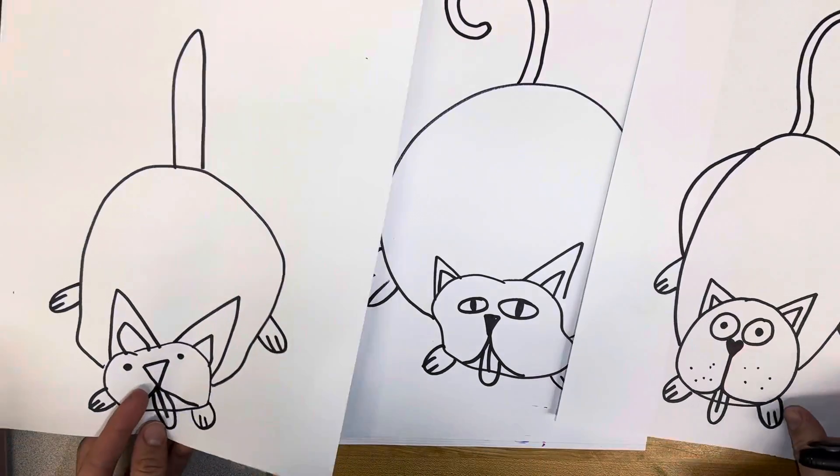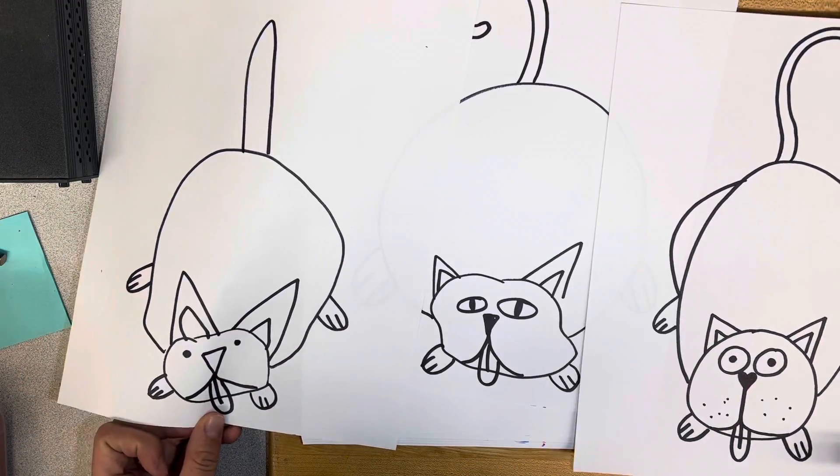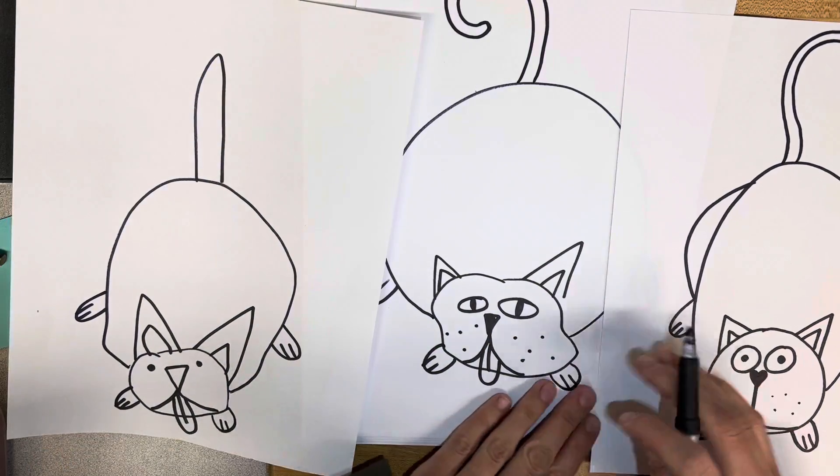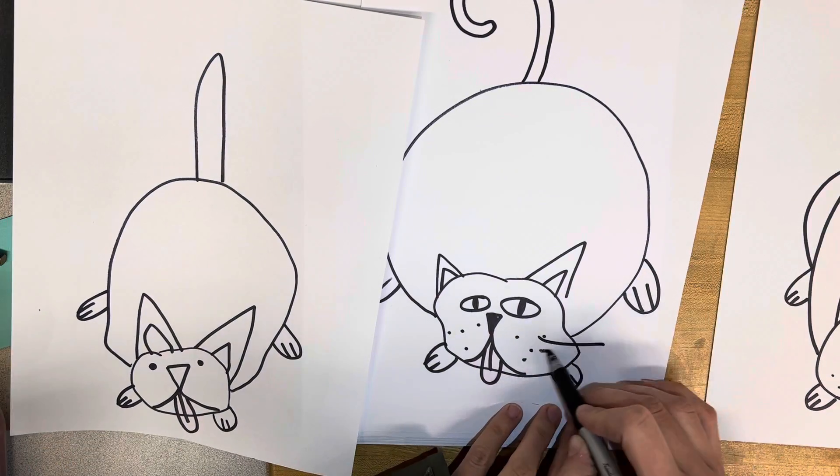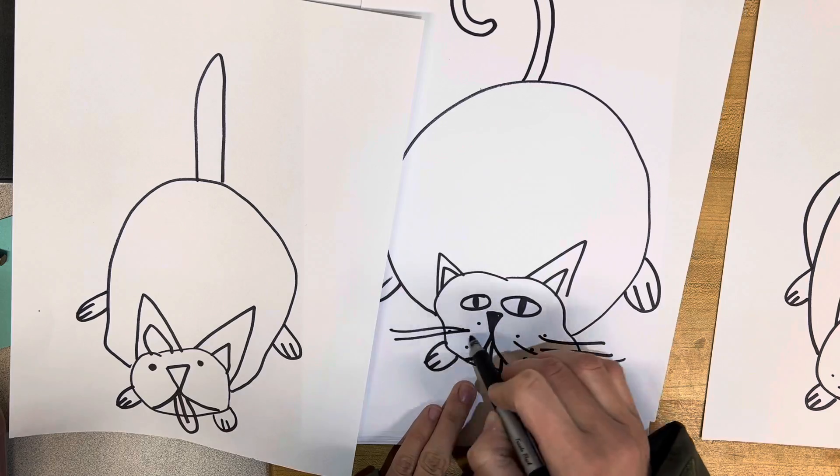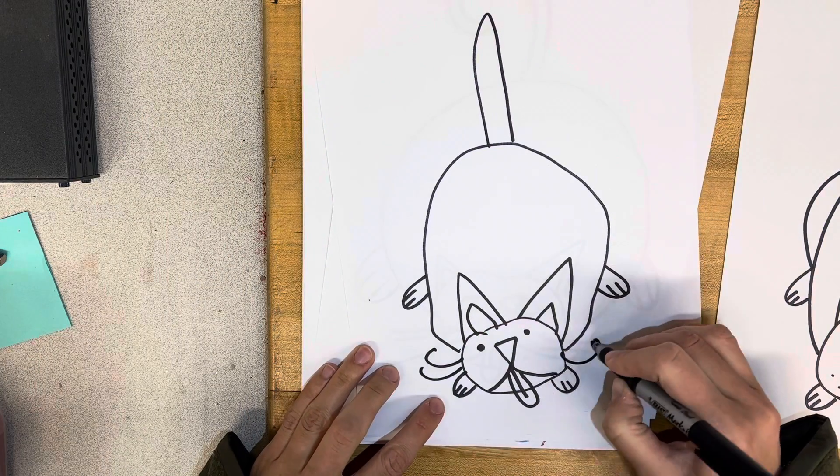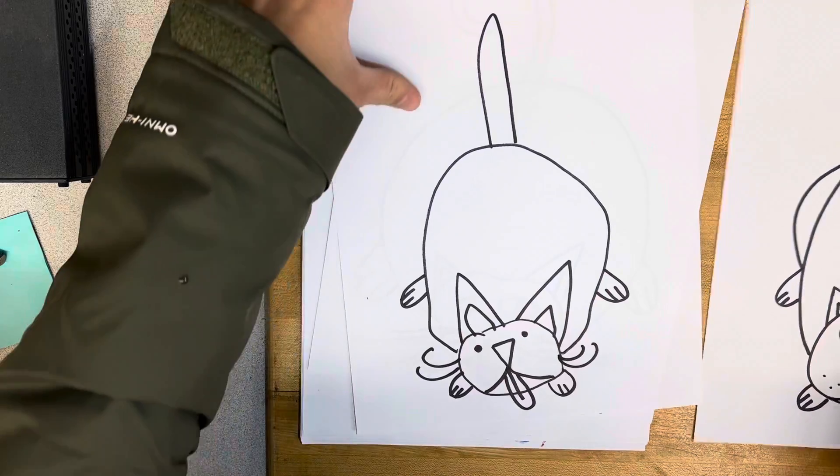All right, so these are all kitty cats drinking out of the lake. They're all different, and they're all wonderful. So you can add little dots for whiskers, or you can actually draw whiskers if you want to. Maybe your whiskers are straight, or maybe they curl, or maybe you just leave yours with dots.